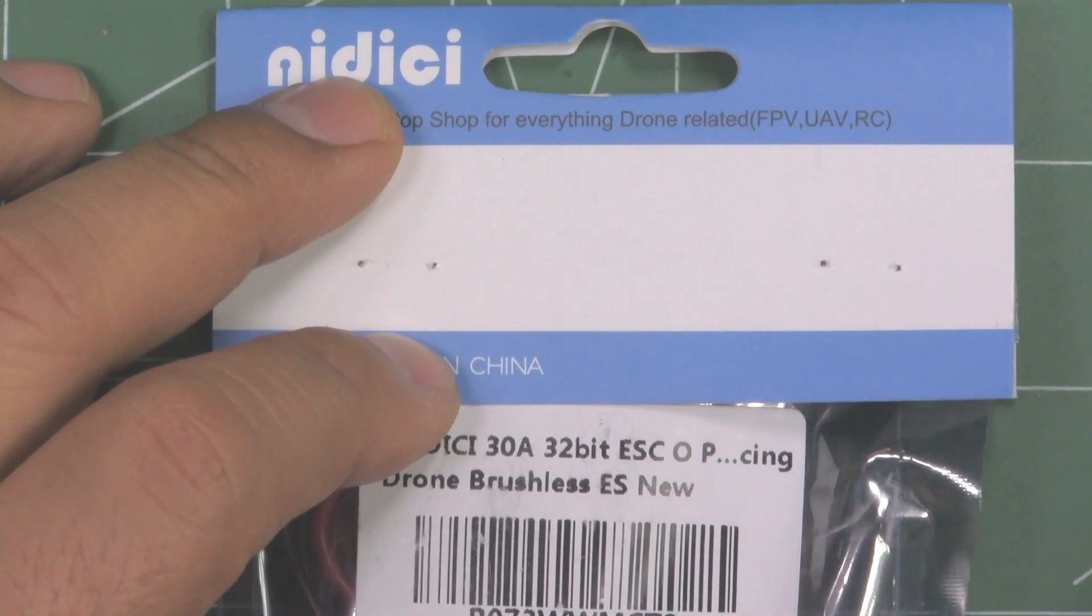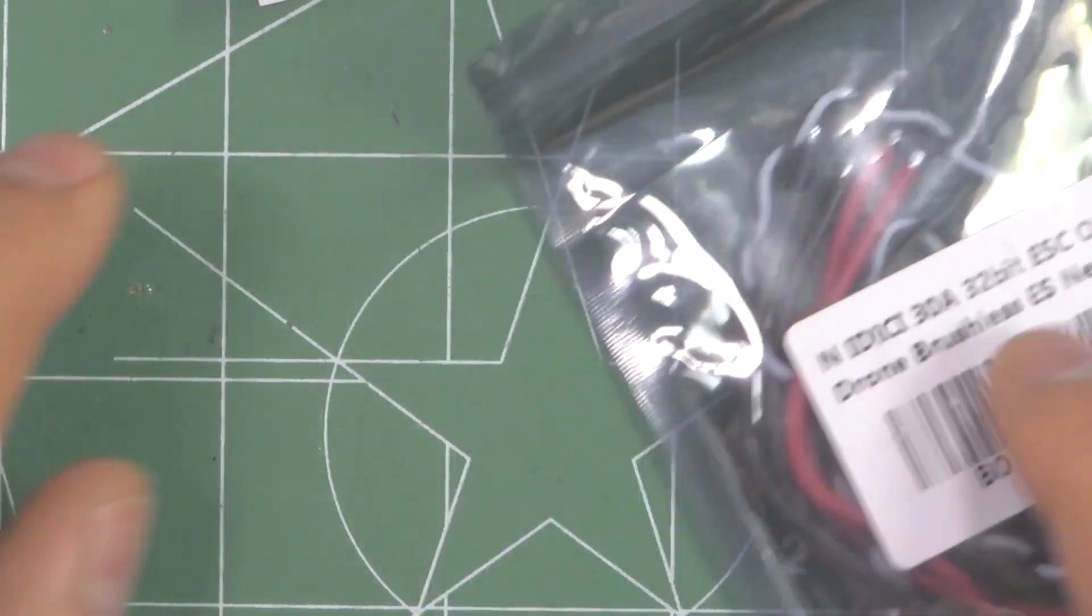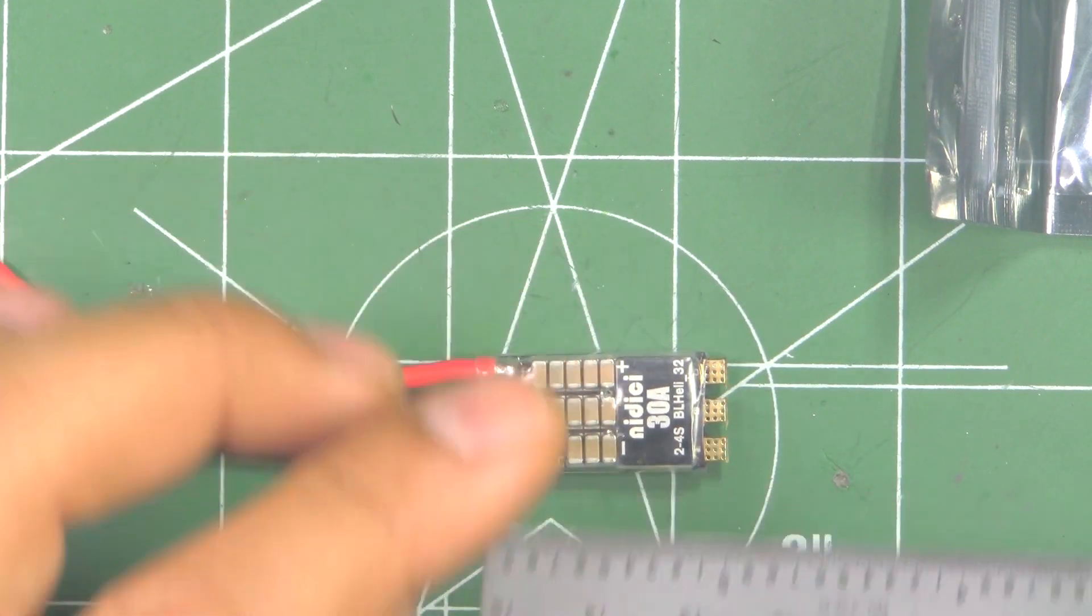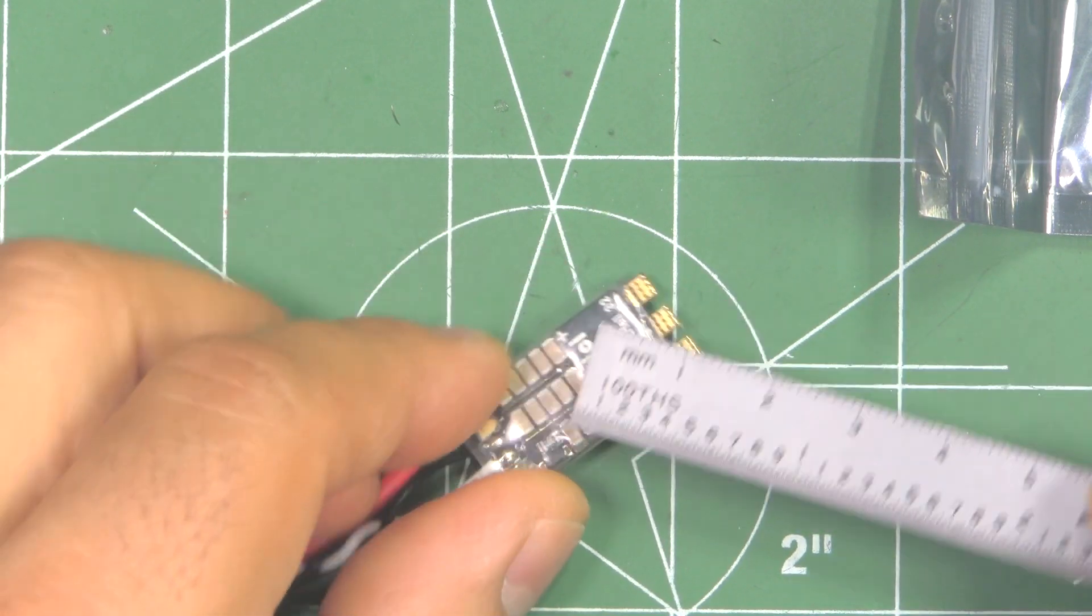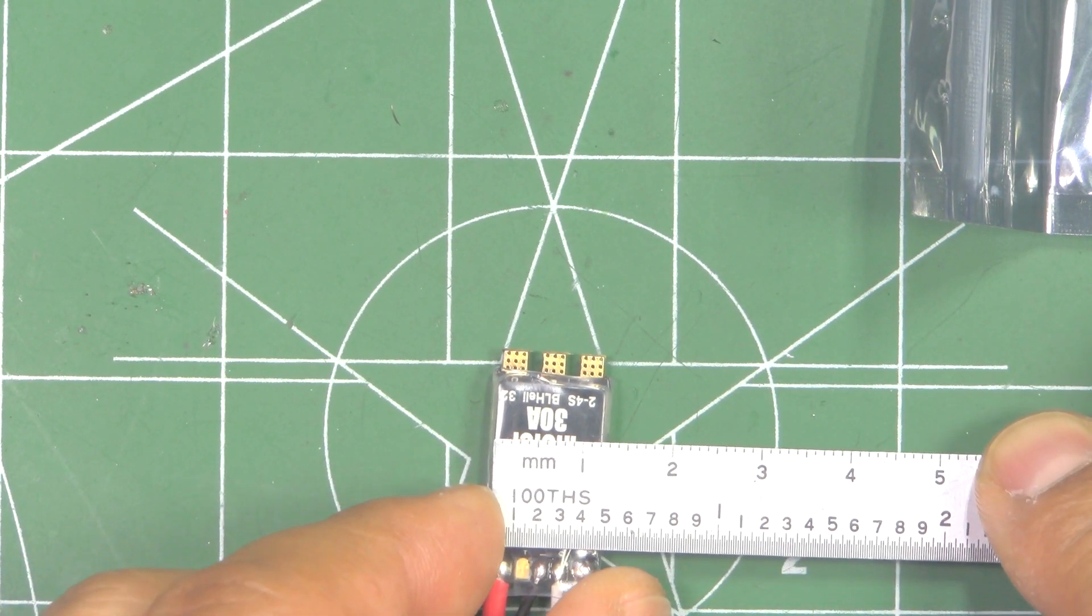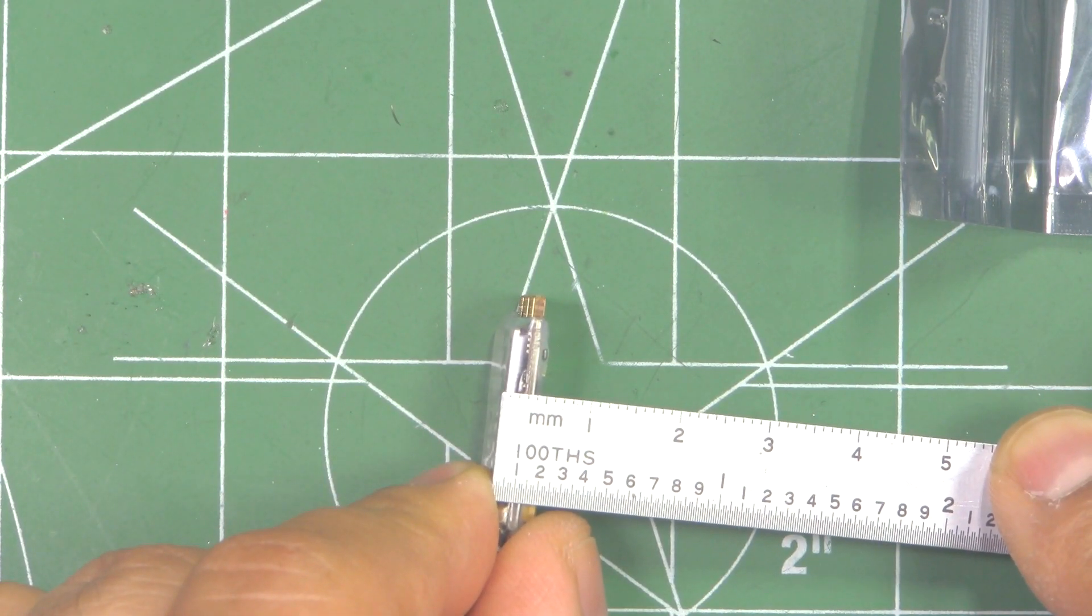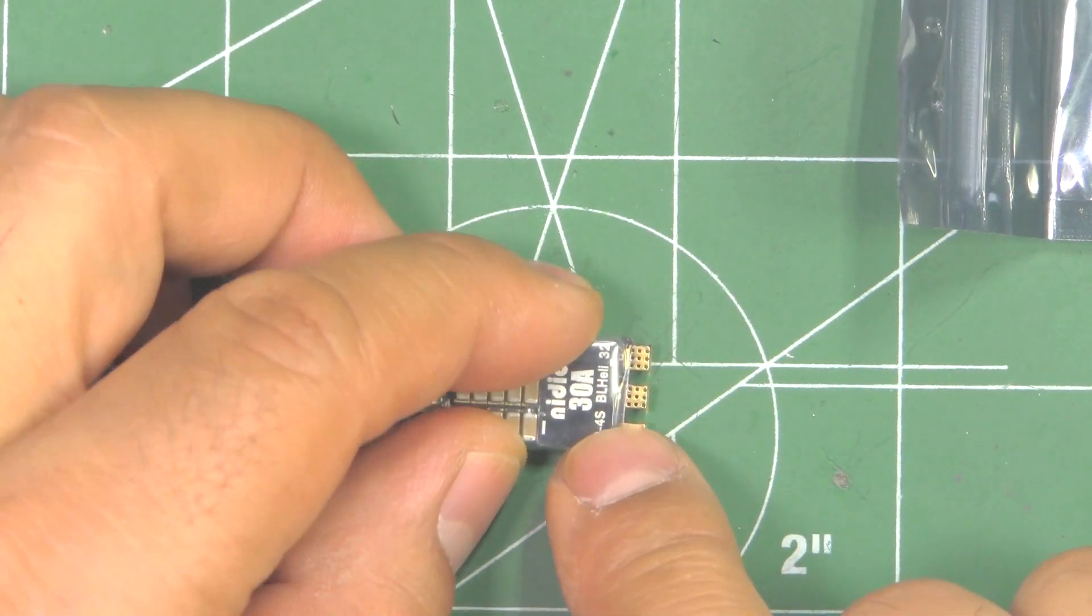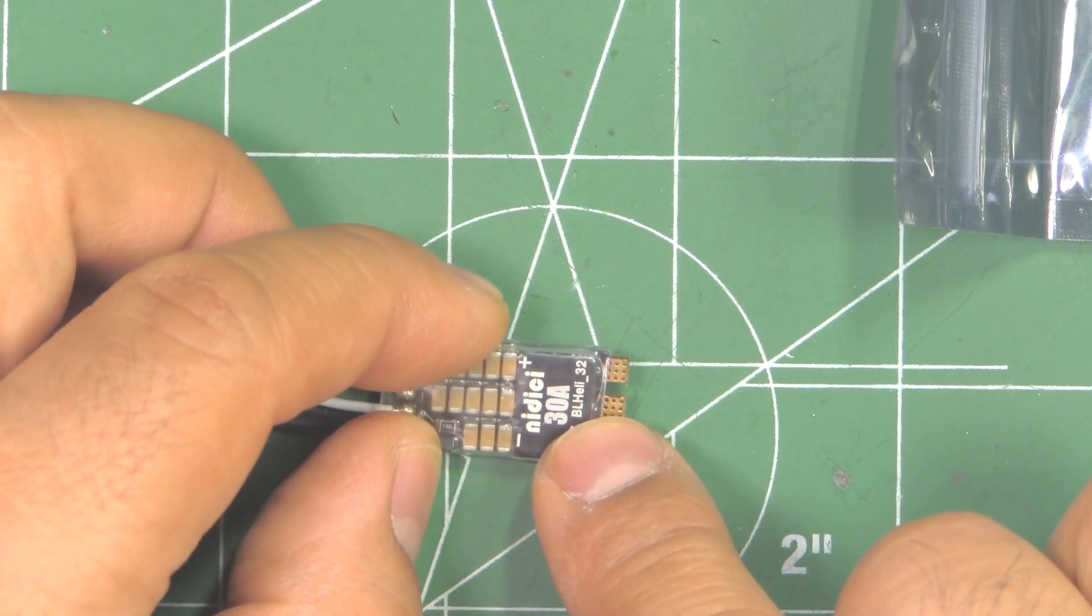As you can see they come in this anti-static bag and they'll come in one of those padded envelopes. Here it is, as you can see pretty small footprint on this ESC. It's around 25mm long by about 12.5 to 13mm wide, and thickness is about 4.5 to 5mm. This is a 30 amp ESC and it runs on BLHeli 32, and it's 2 to 4S rated.